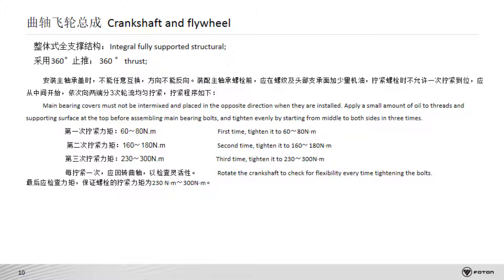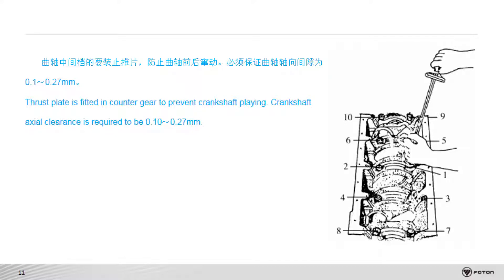The main bearing cap should be used in pairs. Tighten it three times, starting from the middle. The axial end-play of the crankshaft is 0.1 to 0.27 mm. According to the service manual, thickened thrust plates can be selected to meet the clearance requirements.